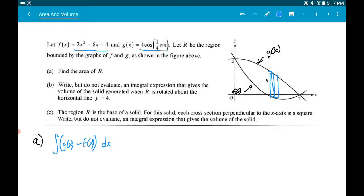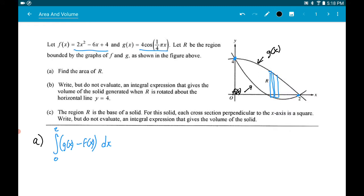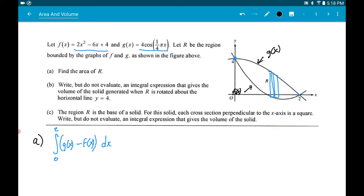It looks like the intersection points, the x values, go from 0 to 2. And that would be a great setup. Now I'm not going to find the answer right now, but this was a calculator question. So you could use a calculator with the function integrate to actually find the answer pretty quickly.